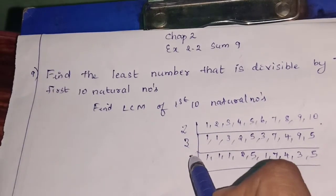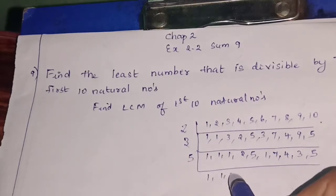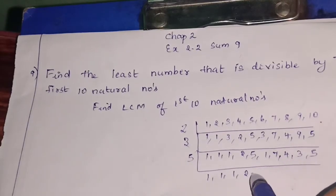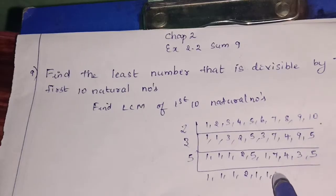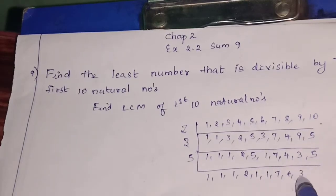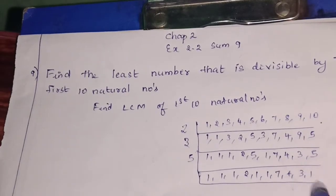Next you can go with 5. 1, 1, 1, 2, 5 - 1's are 5, 1, 7, 4, 3, 1. Next you can go with 2.